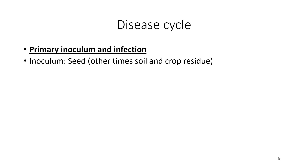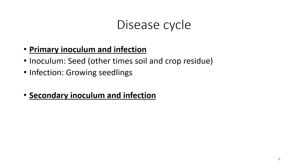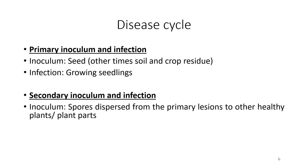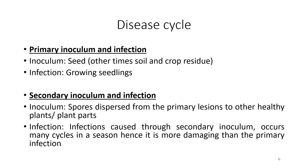Disease Cycle — Primary inoculum and infection: The primary inoculum comes from seeds and also from soil and crop residue. Primary infection occurs on growing seedlings. Later on, secondary inoculum and infection occurs. Secondary inoculum are the spores dispersed from the primary lesions to other healthy plants or plant parts. Secondary infection occurs many cycles in a season, making it more damaging than the primary infection.